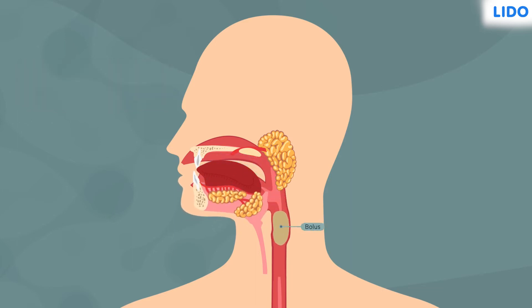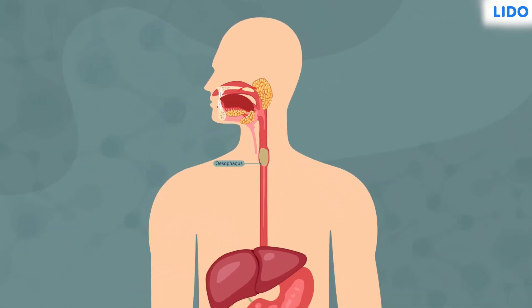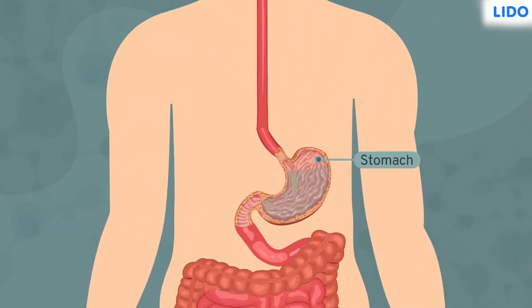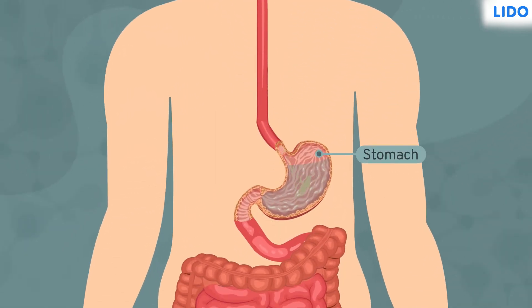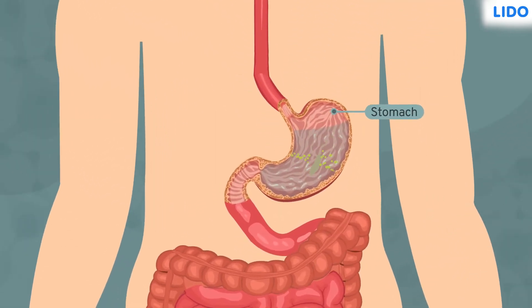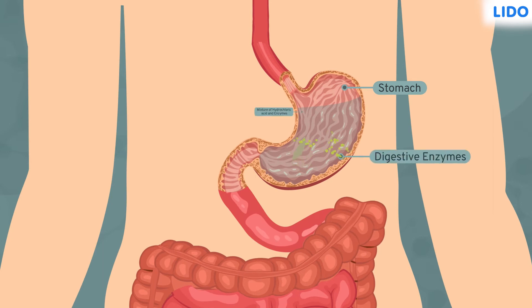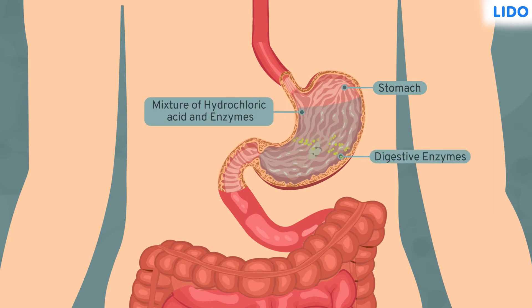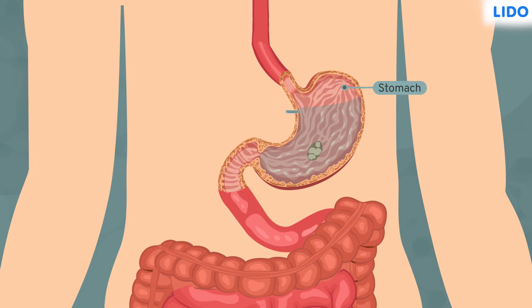This mixture called the bolus passes through the esophagus and reaches the stomach. Digestive enzymes and concentrated hydrochloric acid in the stomach further break down the bolus to a pulp-like fluid called chyme.